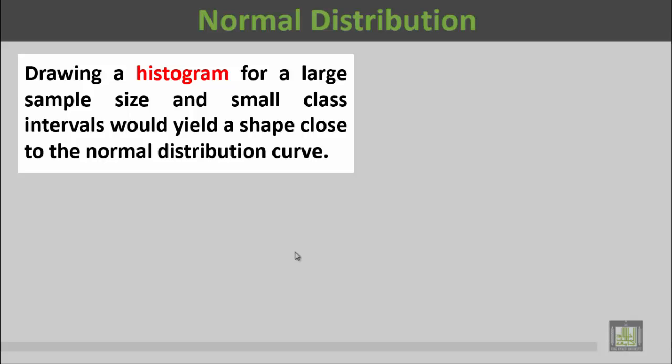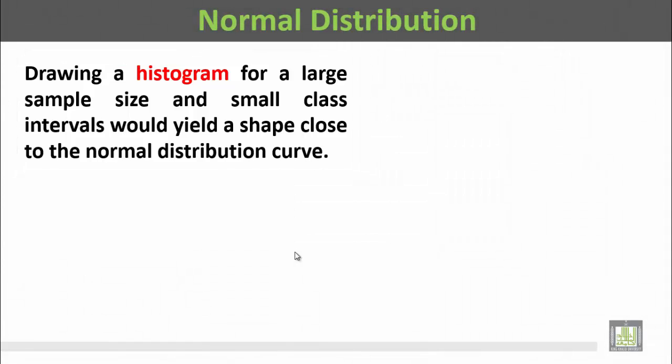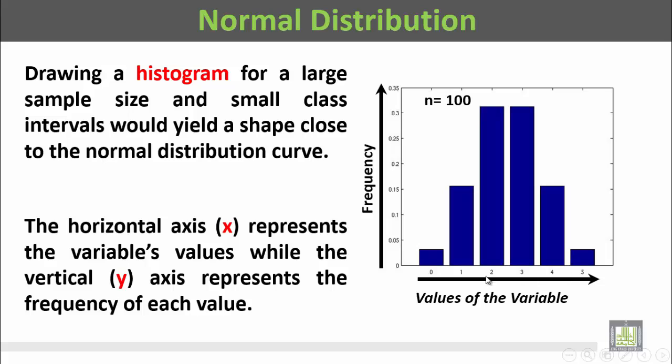الأعمدة المتلاسقة ستقول إلى شكل منحنى التوزياء الطبيعي كما يلي. This is the horizontal axis and this is the vertical axis.